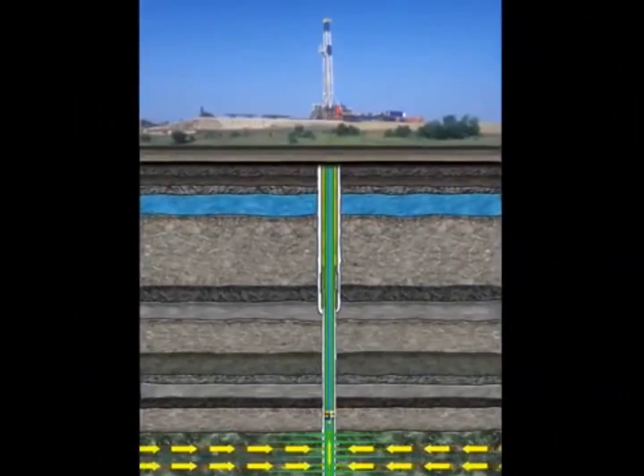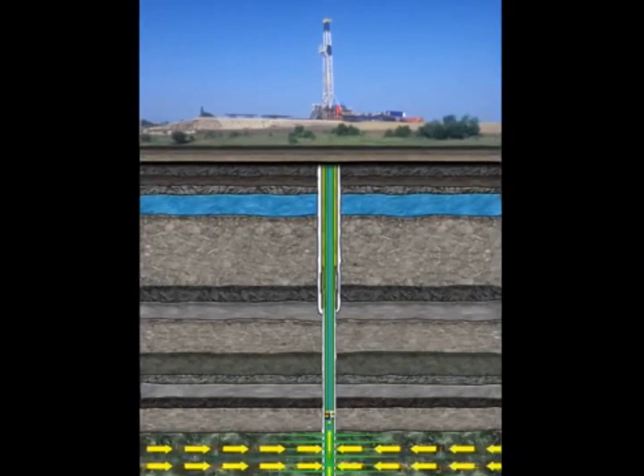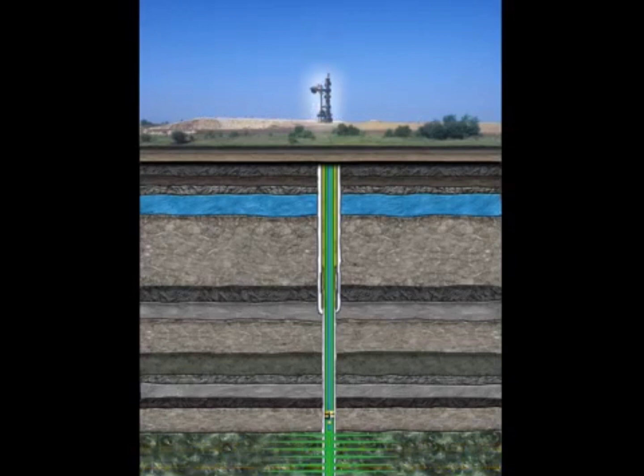Before the drilling rig is dismantled and moved away to its next location, the wellhead equipment, commonly referred to as the Christmas tree, is installed on top of the well.